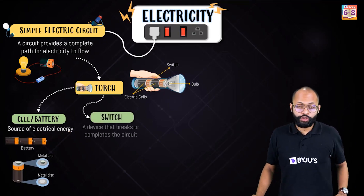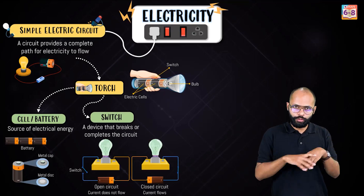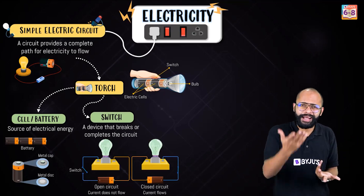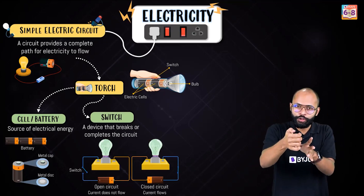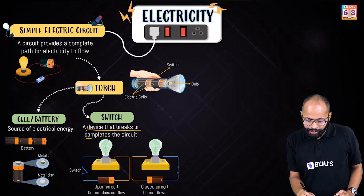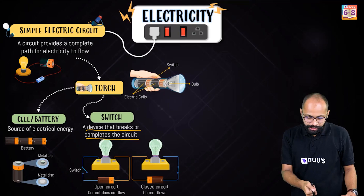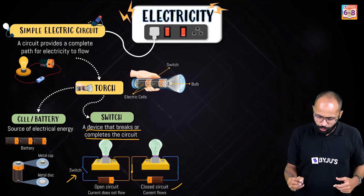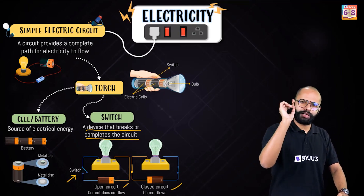Next is the switch. What does a switch do? Its one main job is to make or break the circuit. If you want to stop current from flowing, you need a simpler way than cutting the wire — that's what the switch is for. When you turn it on, the circuit becomes complete and current flows. When you turn it off, the circuit breaks and current stops. A device that breaks or completes the circuit. An open switch means current will not flow; a closed switch means current will flow.